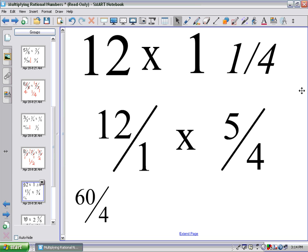I could do it like we did yesterday. 12 times 5 on top gives me 60. 1 times 4 on the bottom gives me 4. And this is 60 over 4. In lowest terms, that's 15 over 1 or simply 15. Either answer is correct.